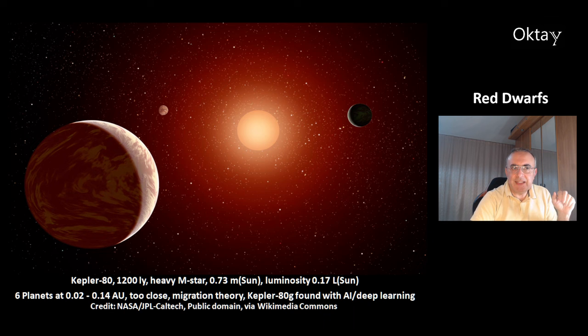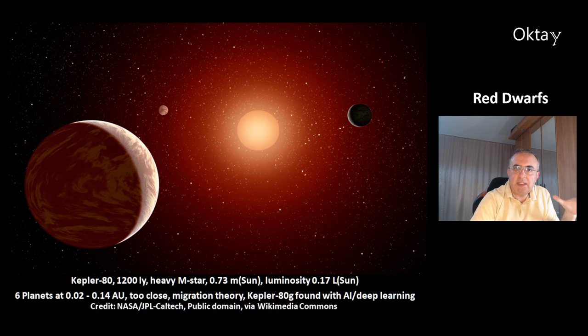Another very interesting system is Kepler-80, at 1,200 light years distance. This is a heavy M-star at the top limit of red dwarfs, with a mass of 73% of the sun and a luminosity of 17% of the sun. This red dwarf has six planets at 0.02 to 0.14 AU — they are too close to the star to have life. The current theory is migration: these planets formed further out and then migrated inward. One planet, Kepler-80G, is particularly interesting because it was found using a new technique of AI and deep learning.